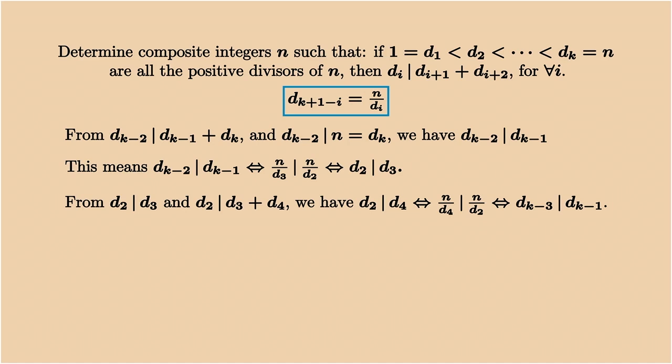So let's do it. From d2 divides d3 and d2 divides d3 plus d4, we get d2 divides d4. And now we inverse it, we get dk minus 3 divides dk minus 1. Well, this is almost what we have. Indeed, with dk minus 3 divides dk minus 1, and dk minus 3 divides dk minus 2 plus dk minus 1, we get dk minus 3 divides dk minus 2.